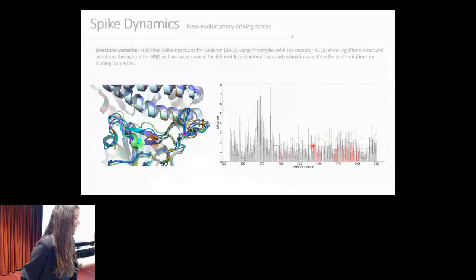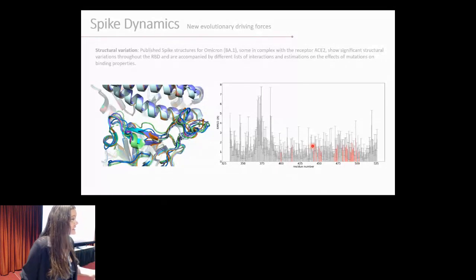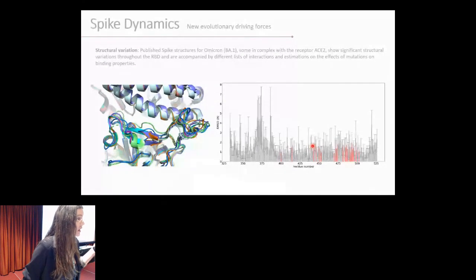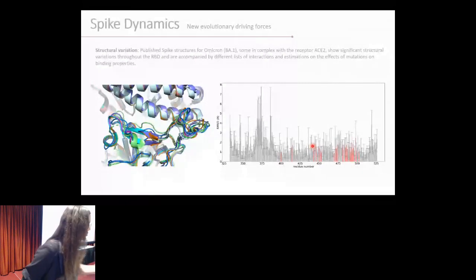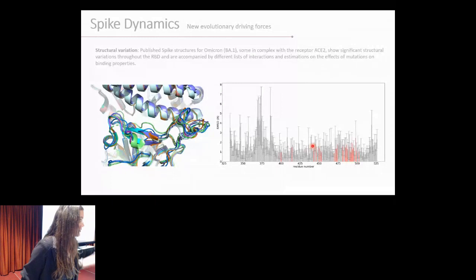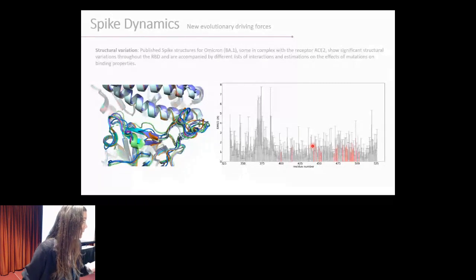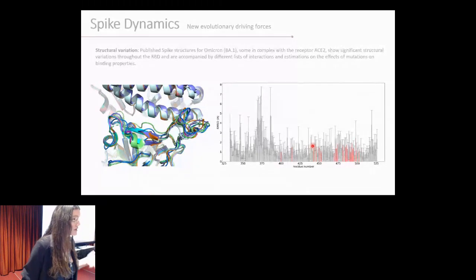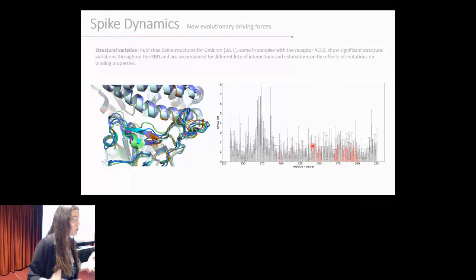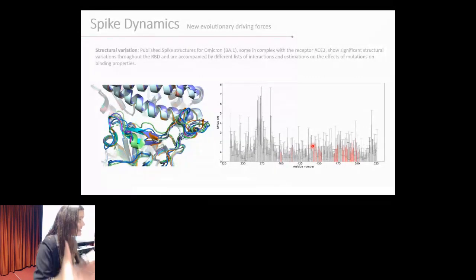When Omicron appeared, experimentalists worked very hard and very fast because we had lots of structures within one or two weeks. Those structures were accompanied by articles that were listing interactions, specific interactions that were gained or lost compared to wild type or previous variants and giving a list of residues that were associated with those interactions. But when we checked those articles, they were not agreeing between themselves. Their lists were a bit different. The strength of binding that they were predicting for a new variant was a little bit different. When we looked at those structures, it was kind of explained because those structures were different between themselves. If you are evaluating one structure as a static entity, then you will see different interactions in that interface.